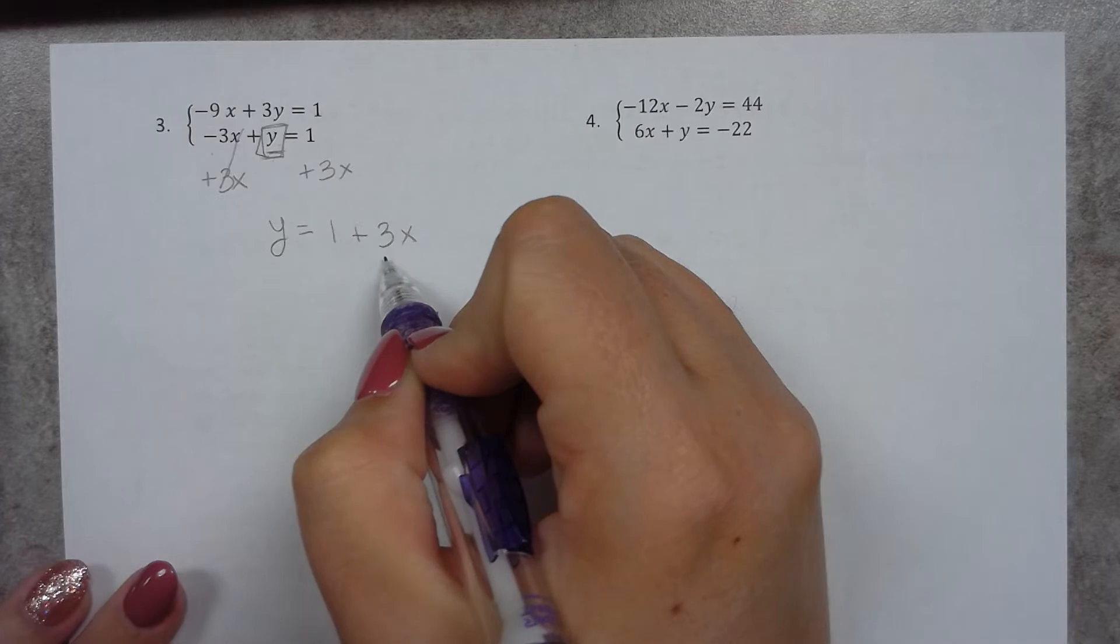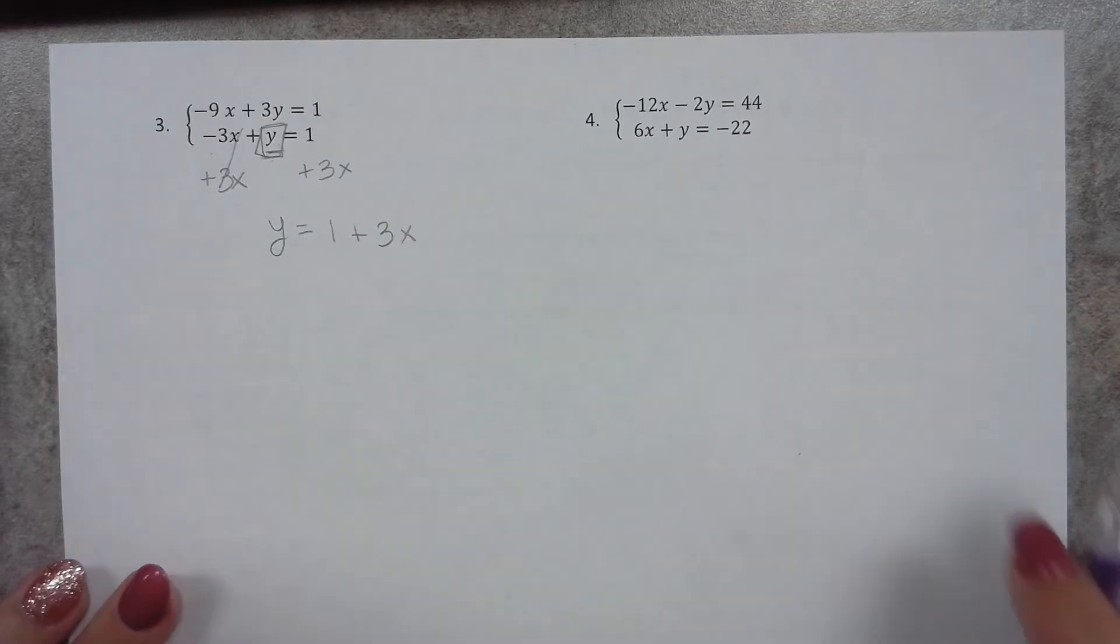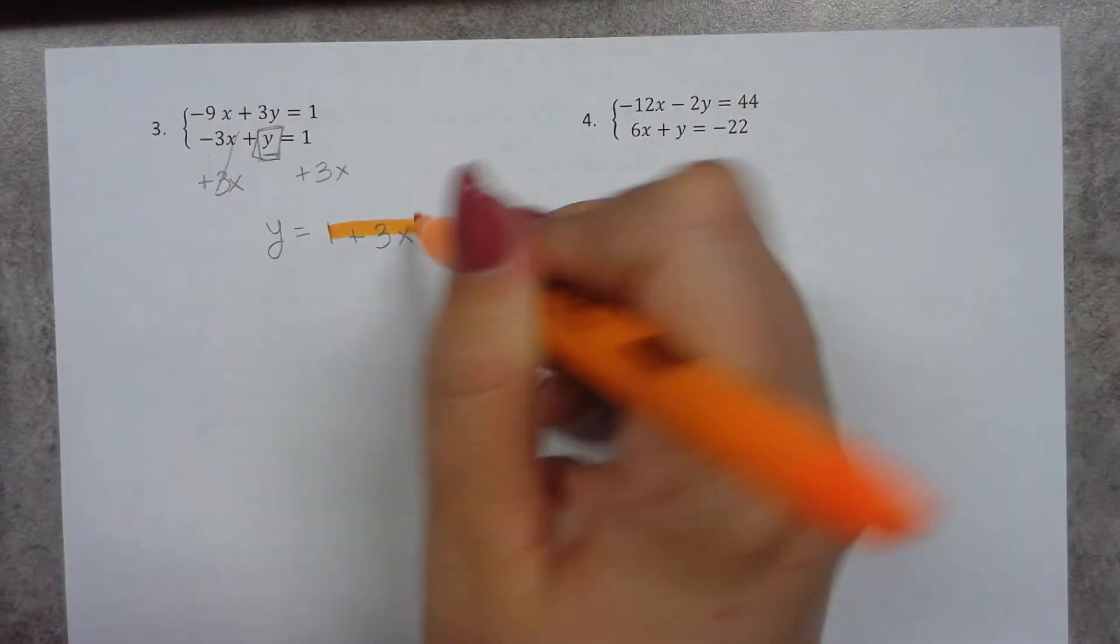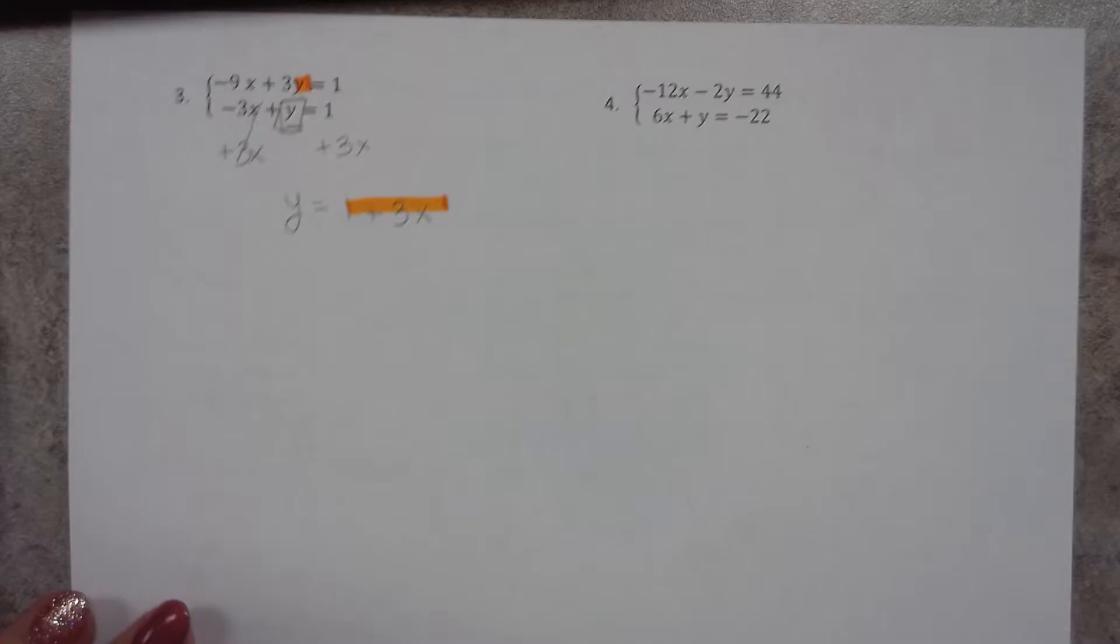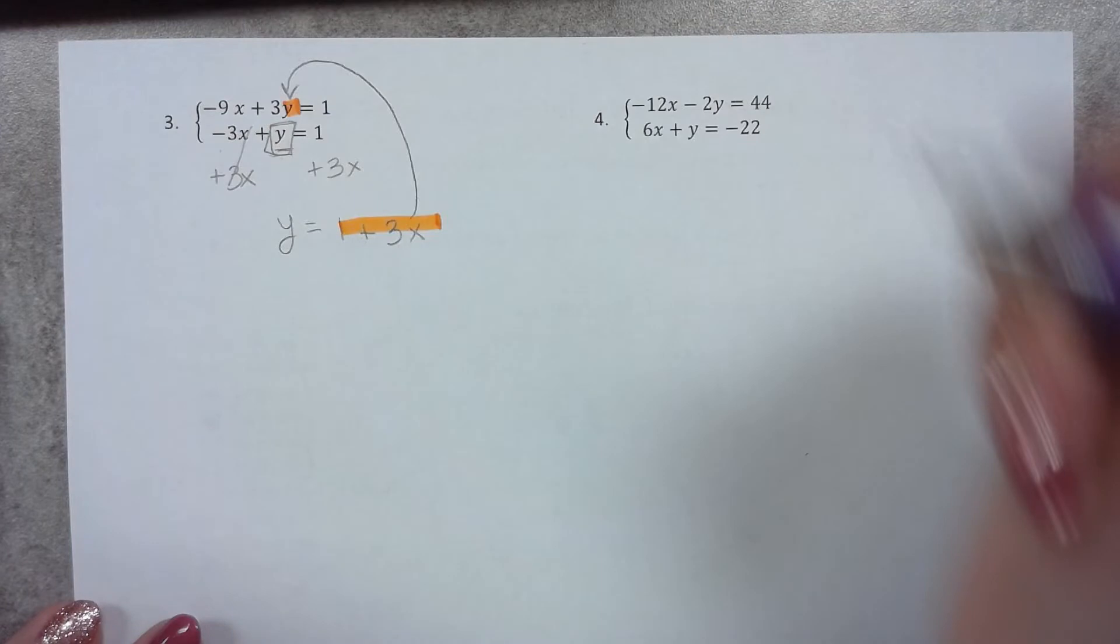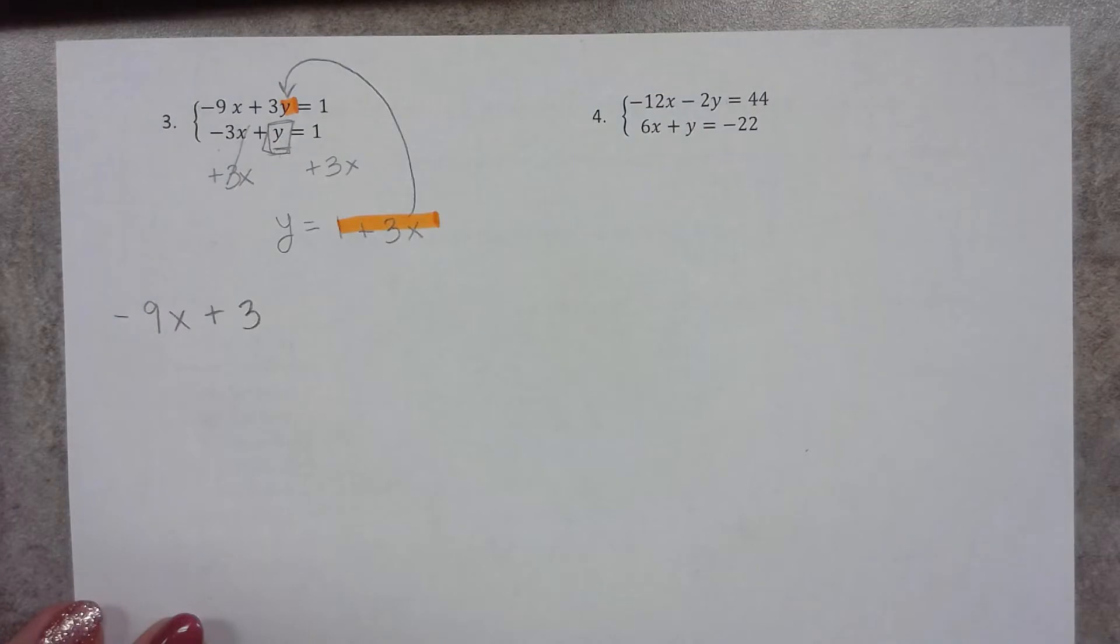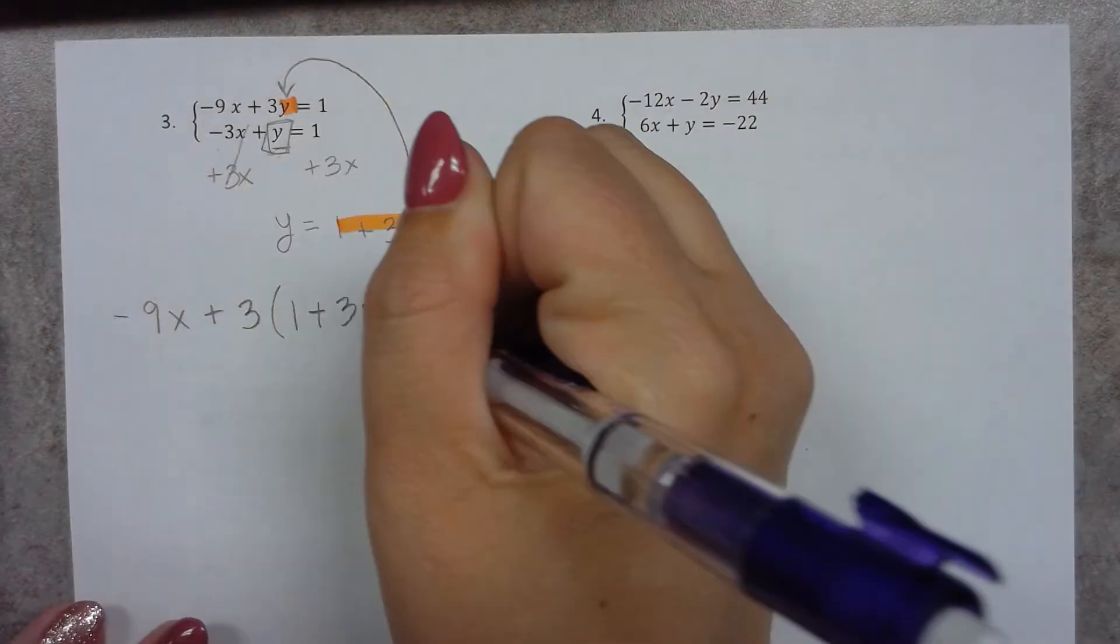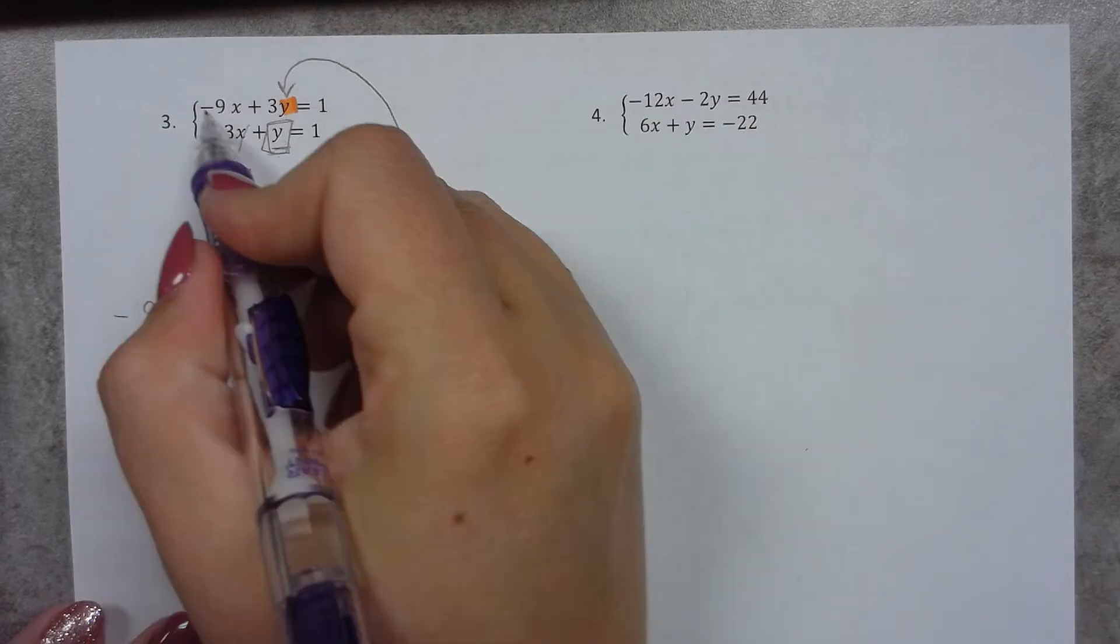So now that I have y equals, I can now take this equation, y equals 1 plus 3x, and put it in this y spot here. So I'm going to take this equation and plug it in for y here. So that gives me negative 9x plus 3y, but instead of y, I'm going to put 1 plus 3x equals 1. So I took this equation and I put this in for y.